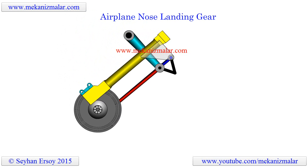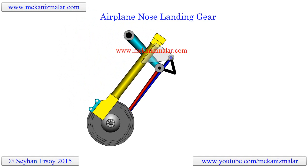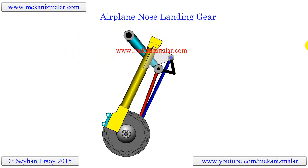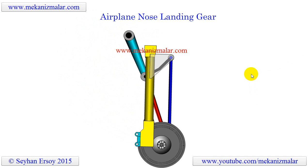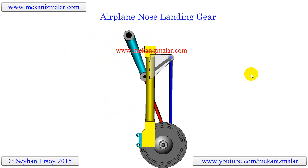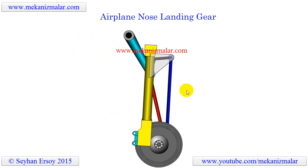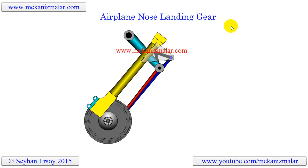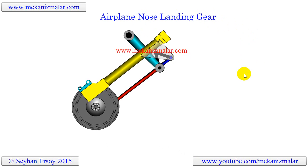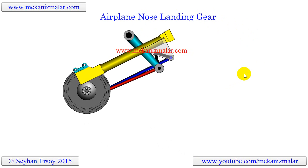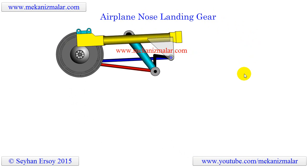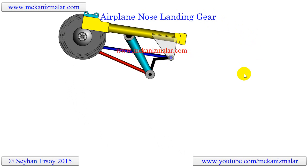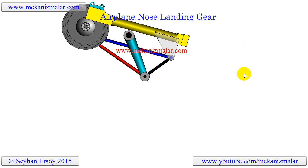Welcome to the video tutorials of mechanisms by Meconismiller. The landing gear mechanism shown here is a retractable landing gear for an aircraft nose gear, which also can be used for the main gear. My next animation will be a description of the main landing gear for this configuration.